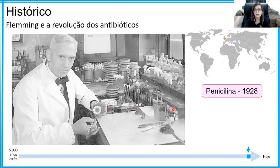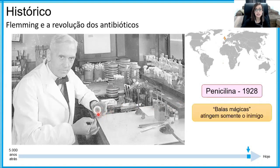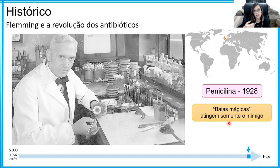Em 1928, ele isolou a penicilina — chamada assim porque o gênero de fungos que crescia nas culturas de Fleming era do gênero Penicillium. A penicilina deu início à era chamada de era das balas mágicas, porque elas atingiam somente o inimigo. Ou seja, matavam as bactérias e o hospedeiro — o paciente — conseguia se recuperar.